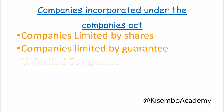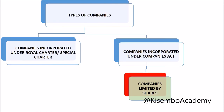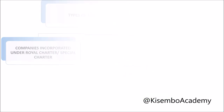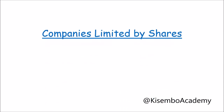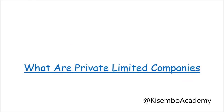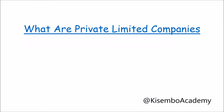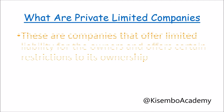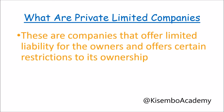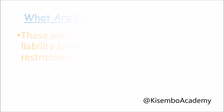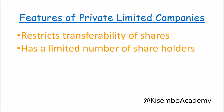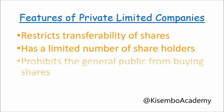Companies limited by shares fall into three further categories: private limited companies, public limited companies, and government companies. A private limited company is a type of company that offers limited liability for the owners with certain restrictions on ownership. Key features include restricted transferability of shares, a limited number of members — a minimum of two and a maximum of fifty — and prohibition of invitations to the general public to buy shares and debentures.